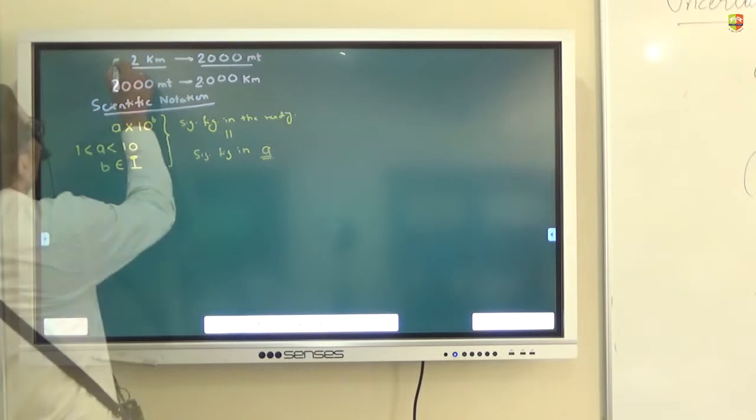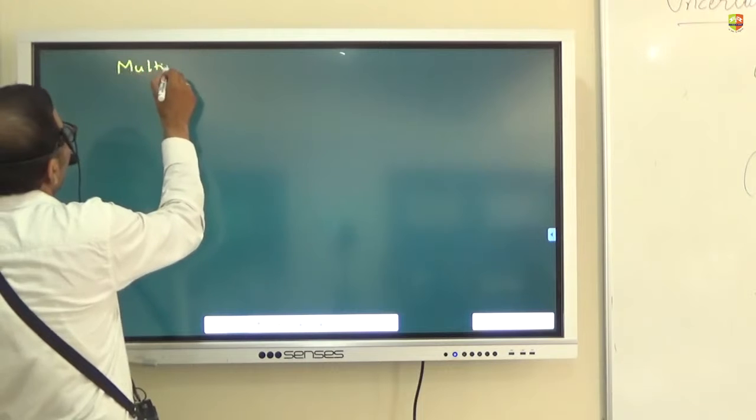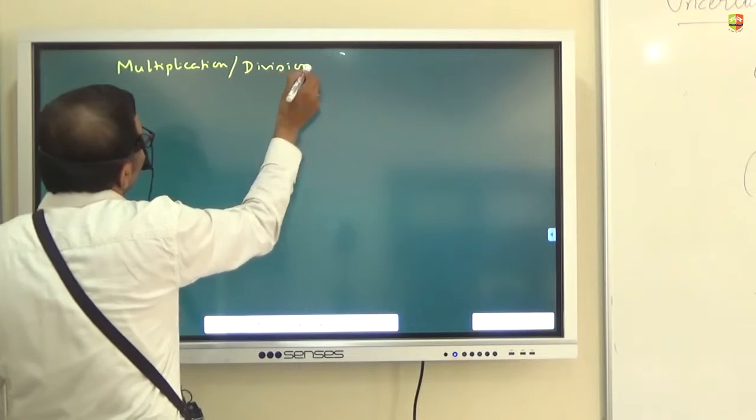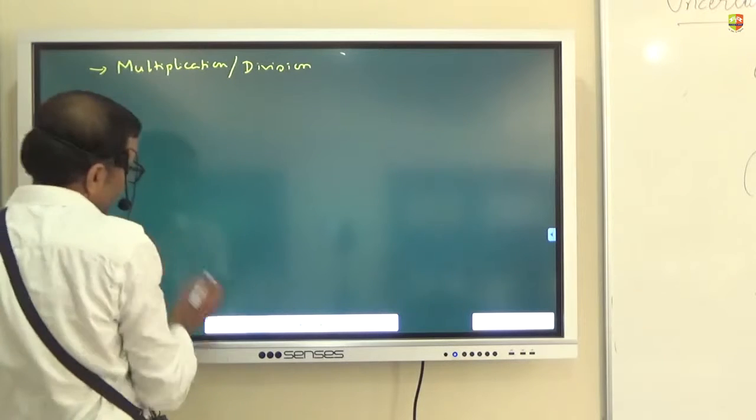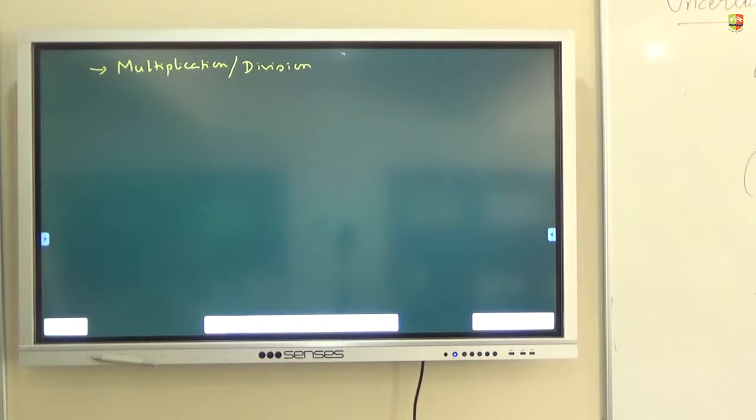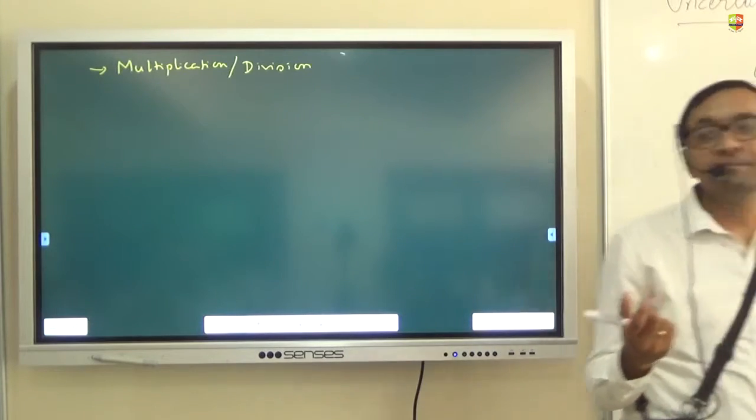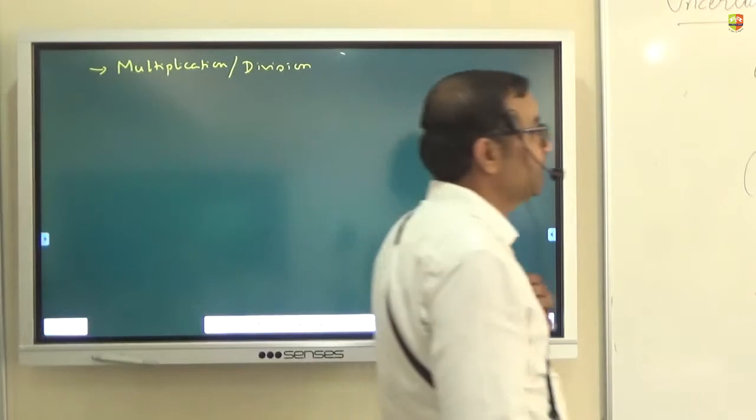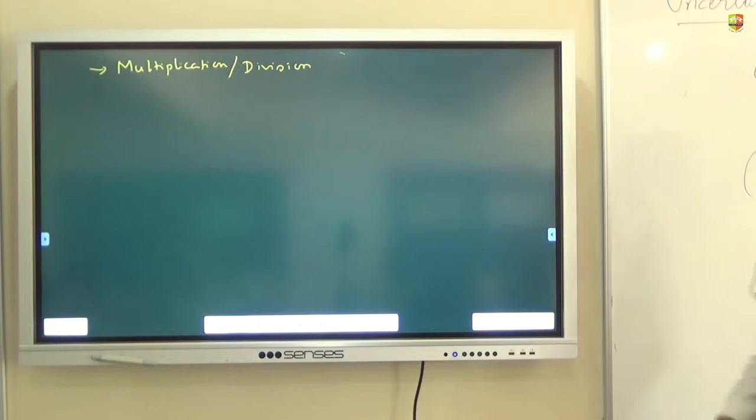In multiplication or division, the final result should retain as many significant figures as there are in the original number with the least significant figures.